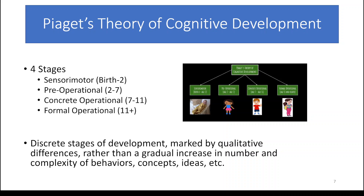Now let's keep in mind that these ages are not set in stone. It's not set in stone that if a kid is two they're going to move into the pre-operational stage, or if they're eleven they're now going to be in the formal operational stage. Remember, students develop at different rates. These are guidelines — they're not perfect deadlines for when these developments should happen.